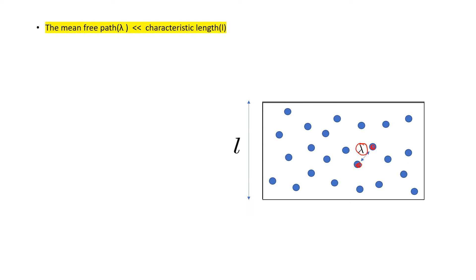When lambda is very large compared to the characteristic length, gas will become rarefied. A simple dimensionless number is used to distinguish between continuum model and rarefied gas model and the dimensionless number is called Knudsen number.